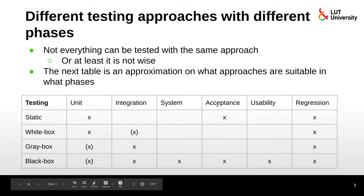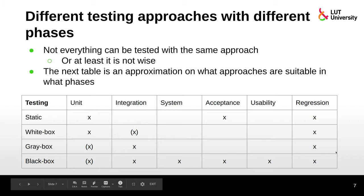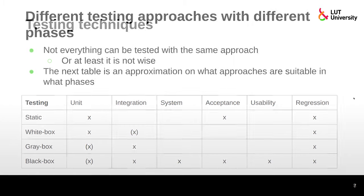In acceptance testing, customers also review manuals and support materials — these are assessed with static testing and inspections. With regression testing it depends on what we are testing; we can use all of these approaches.